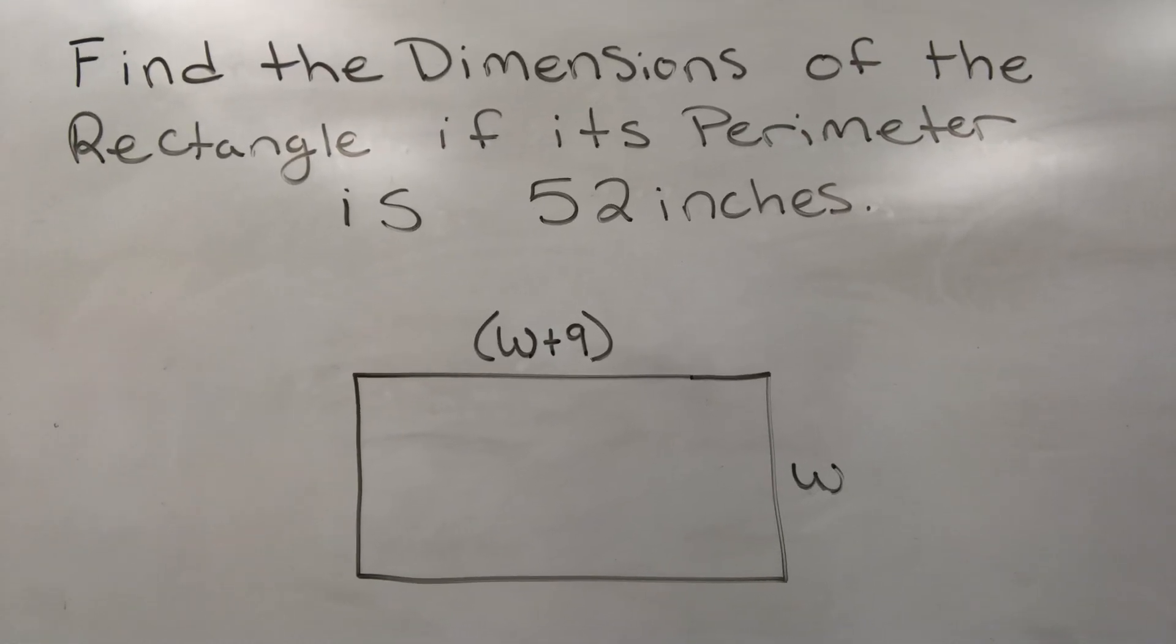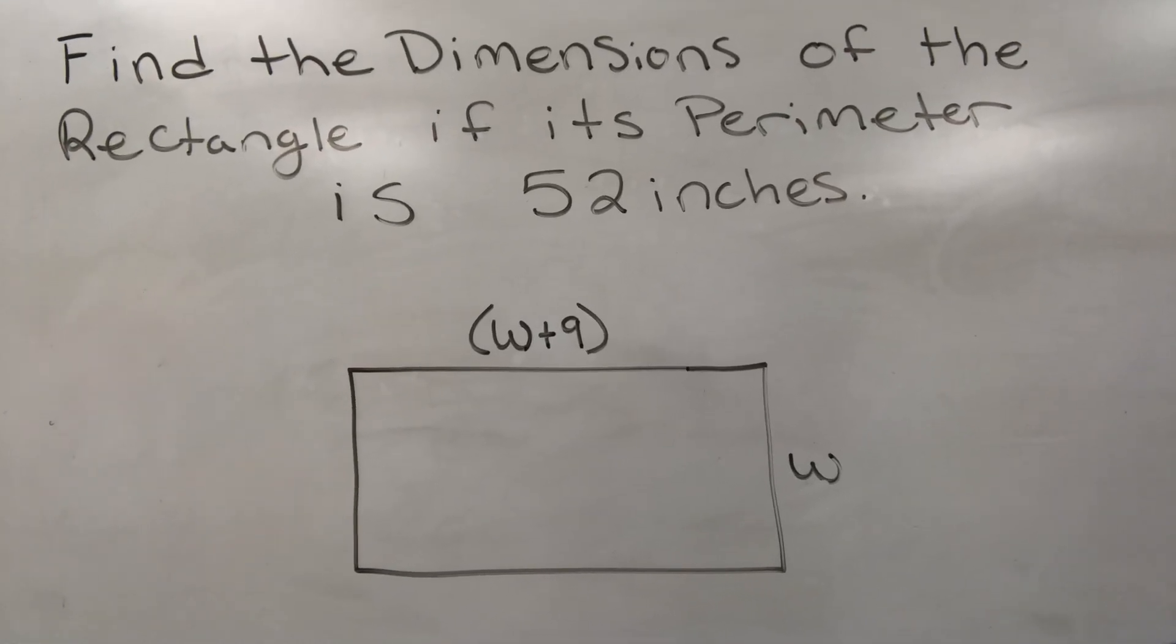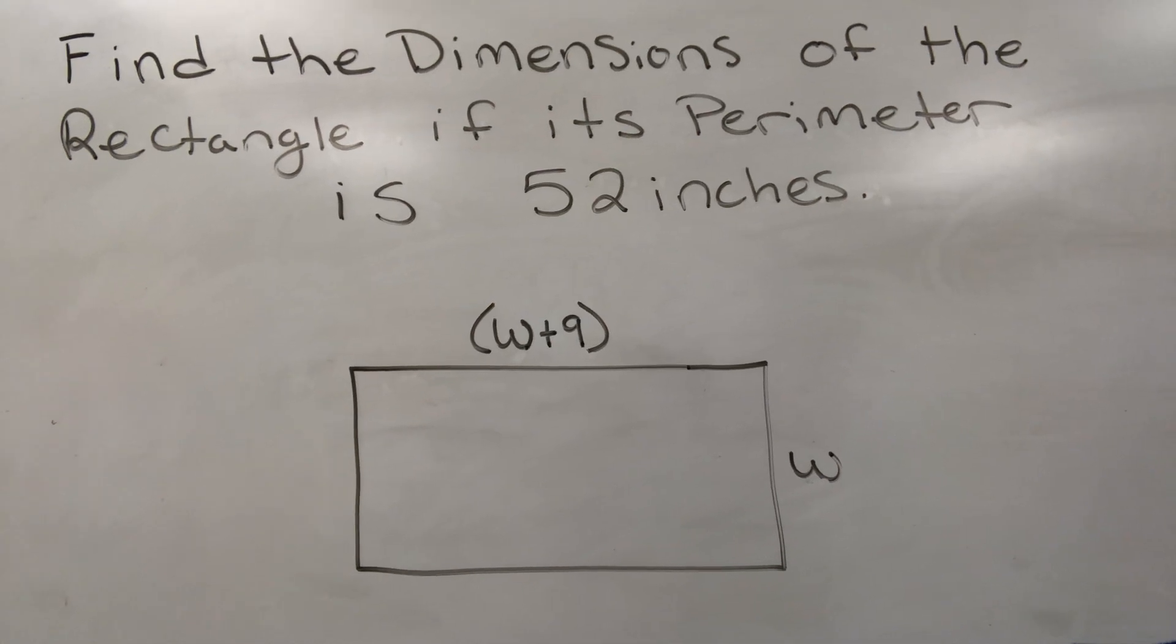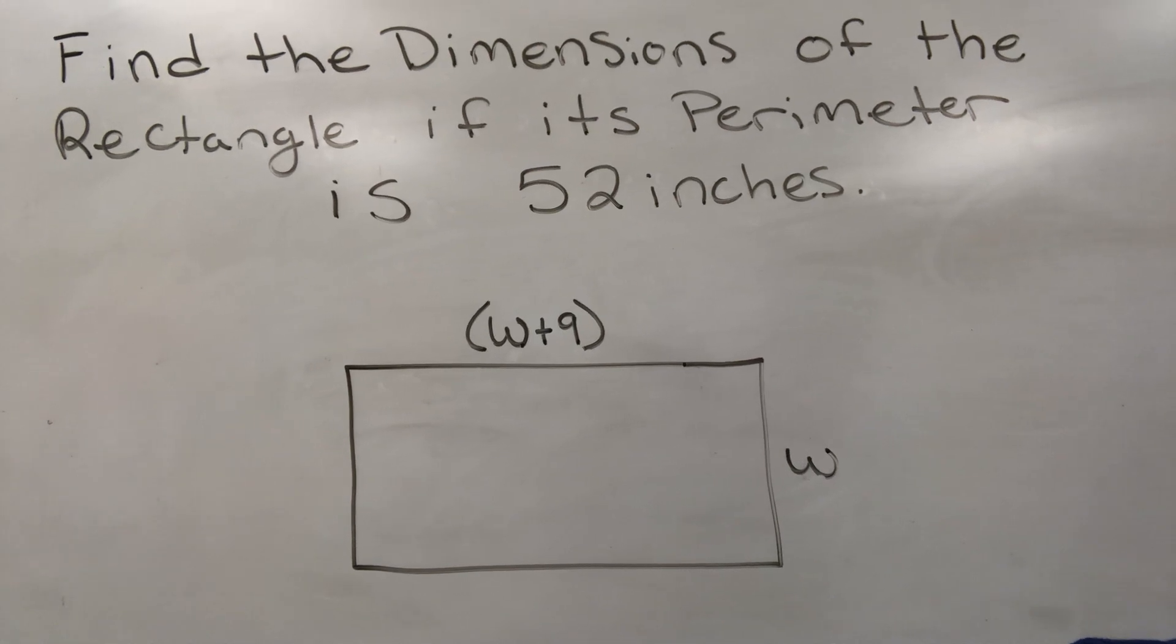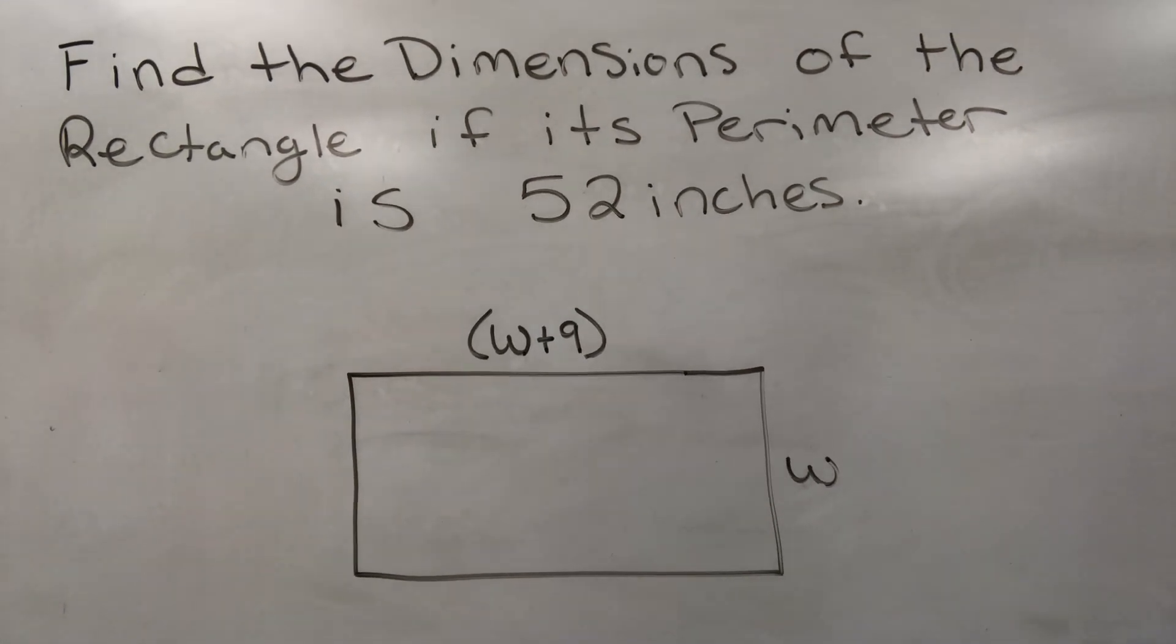Find the dimensions of the rectangle if its perimeter is 52 inches. W plus 9 and W is what's given. How do we find our given dimensions?